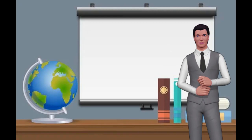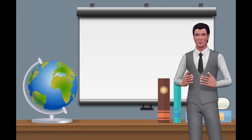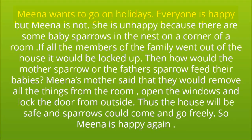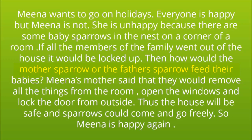Dear students, here is a small activity for you. Look at the following passage carefully and identify the conjunctions in it. 'Meena wants to go on holidays. Everyone is happy but Meena is not. She is unhappy because there are some baby sparrows in the nest on a corner of a room. If all the members of the family went out of the house, it would be locked up. Then how would the mother sparrow or the father sparrow feed their babies? Meena's mother said that they would remove all the things from the room, open the windows and lock the door from outside. Thus the house will be safe and sparrows could come and go freely.' So Meena is happy again.